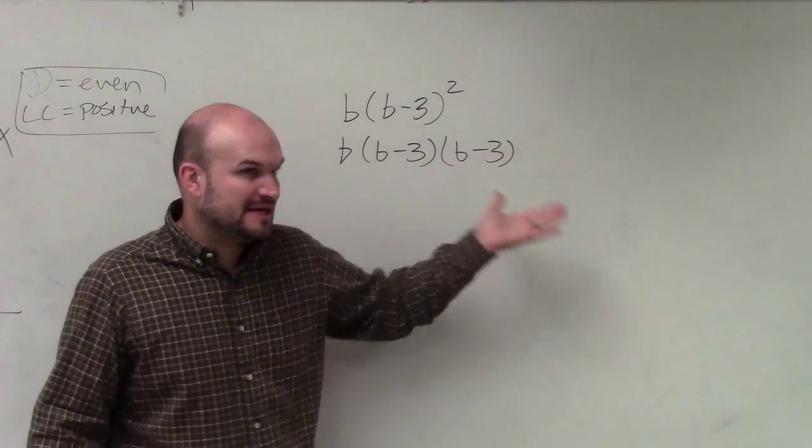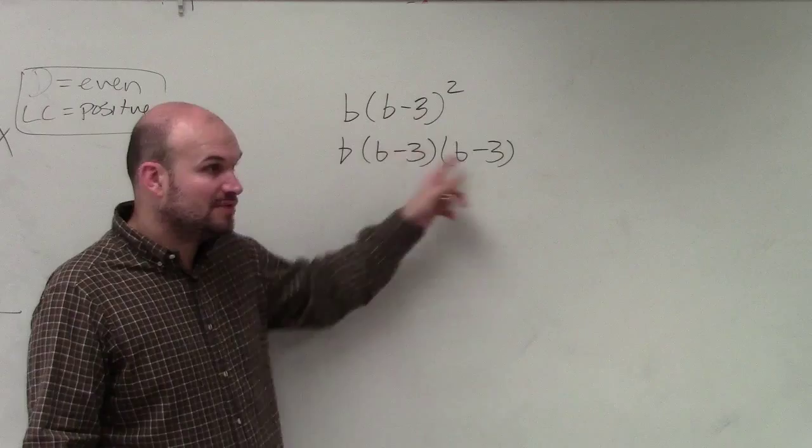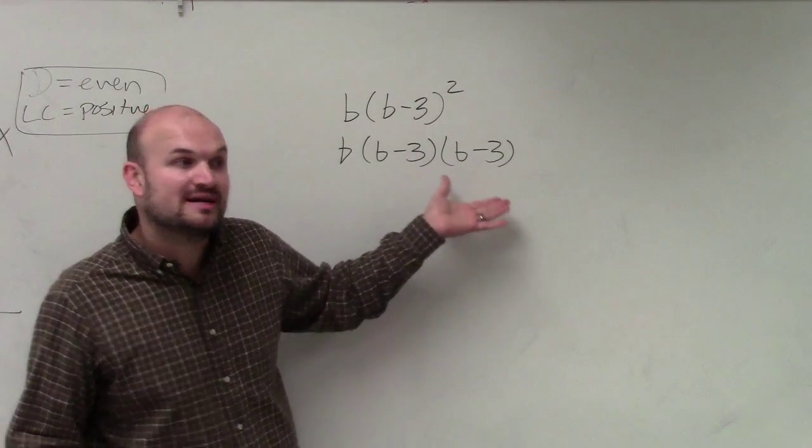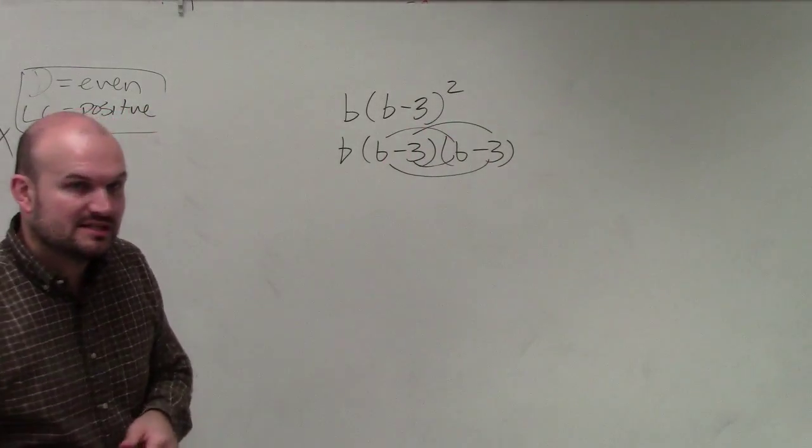It's b minus 3 times b minus 3. These are not a difference of two squares, so we can't just multiply the first terms and last terms. These are the same binomial multiplied by itself, so we have to apply our distributive property or foiling technique.